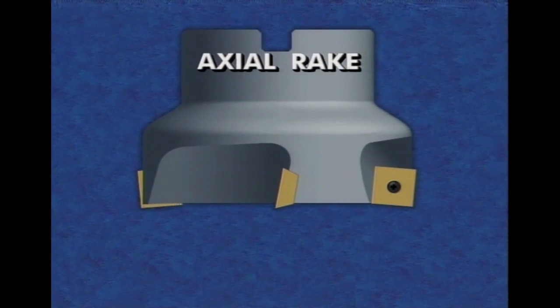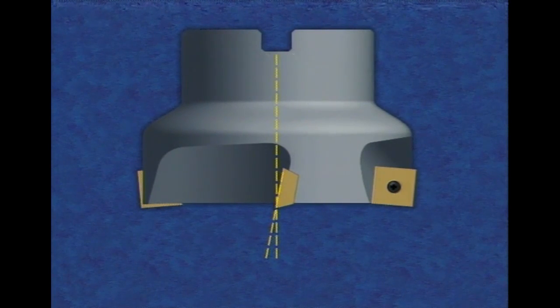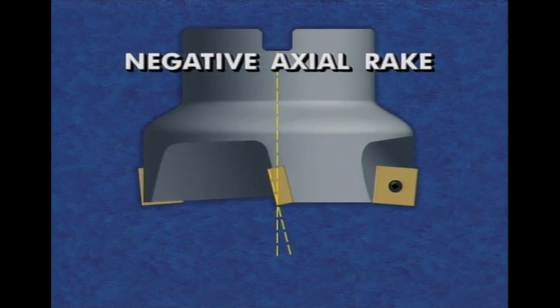The axial rake is the angle measured between the insert face and an axial line or plane, and it may also be positive or negative.